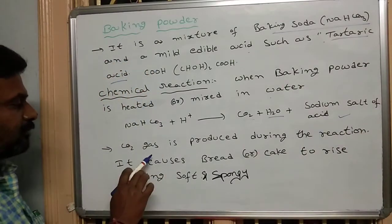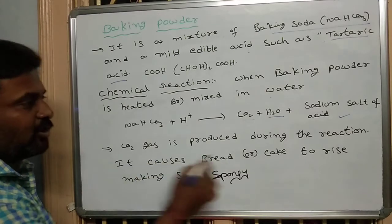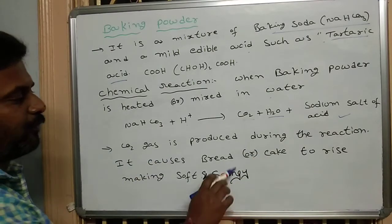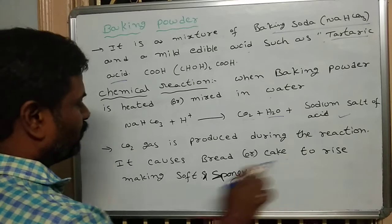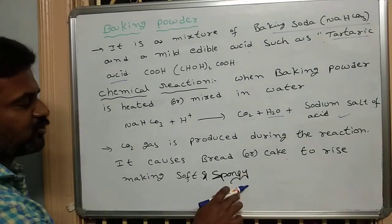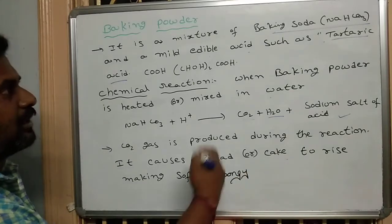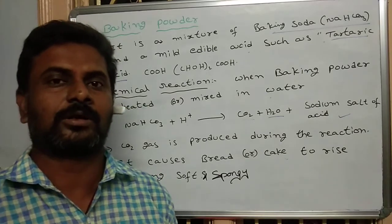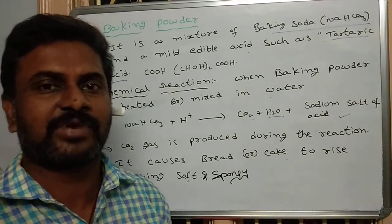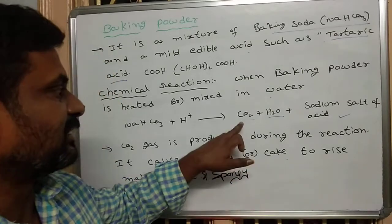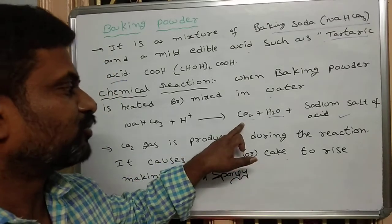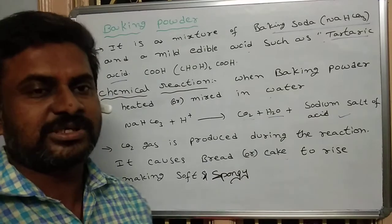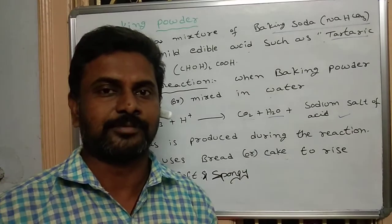In this reaction, carbon dioxide gas is produced, which causes the bread or cake to rise, making it soft and spongy. When baking powder is added during the preparation of cake, carbon dioxide gas is released, and the cake becomes soft and spongy.